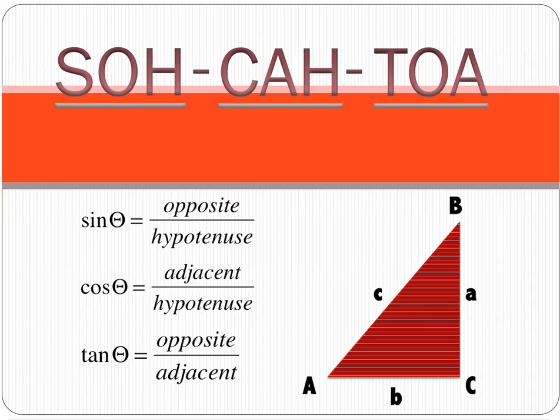When we're talking about opposites, adjacents, and hypotenuse, we're looking at the sides of a right triangle. If you look at the triangle to the right, the little c is the hypotenuse because it's opposite the right angle. It's also the diagonal of the triangle. It is always the hypotenuse.